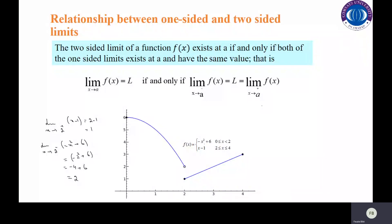Relationship between one-sided and two-sided limits. The two-sided limit of a function f(x) exists at a if and only if both of the one-sided limits exist at a and have the same value. Now, when will the two-sided limit exist? The two-sided limit will exist when both one-sided limits exist and are the same.